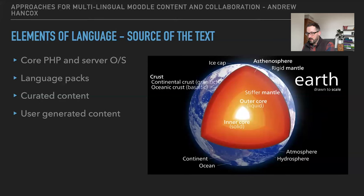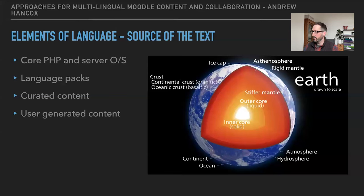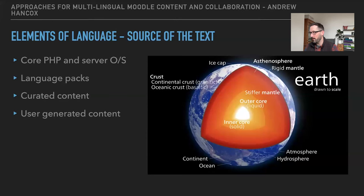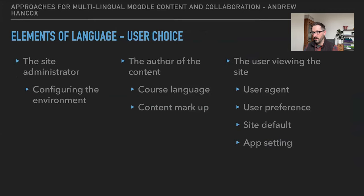You've then got curated content — the stuff written by your teachers when creating page activities and quizzes. And the fourth category is user-generated, learner-generated content, such as forum posts or entries in a database activity. These are four very different sources of text where you have less and less control and less predictability. You can have a structured approach to core PHP; Moodle HQ has done the heavy lifting with language packs; curated content you can guide teachers on. But user-generated content in multiple languages gets quite complicated.